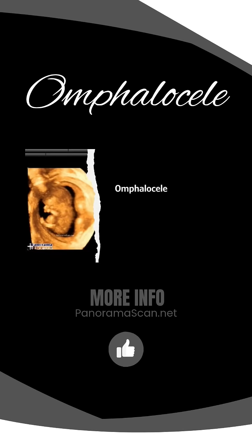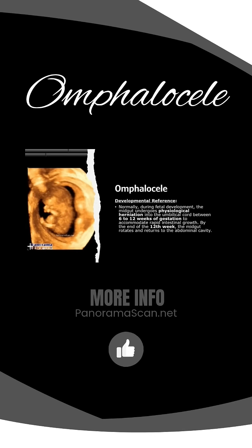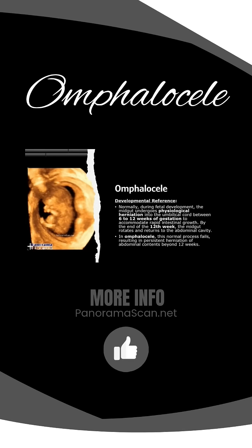To understand omphalocele, let's briefly review its developmental context. During normal fetal development, the midgut temporarily herniates into the umbilical cord between 6 to 12 weeks of gestation. This occurs to accommodate the rapid growth of the intestines. By the end of 12 weeks, the midgut undergoes a process of rotation and returns to the abdominal cavity, completing the normal developmental sequence.